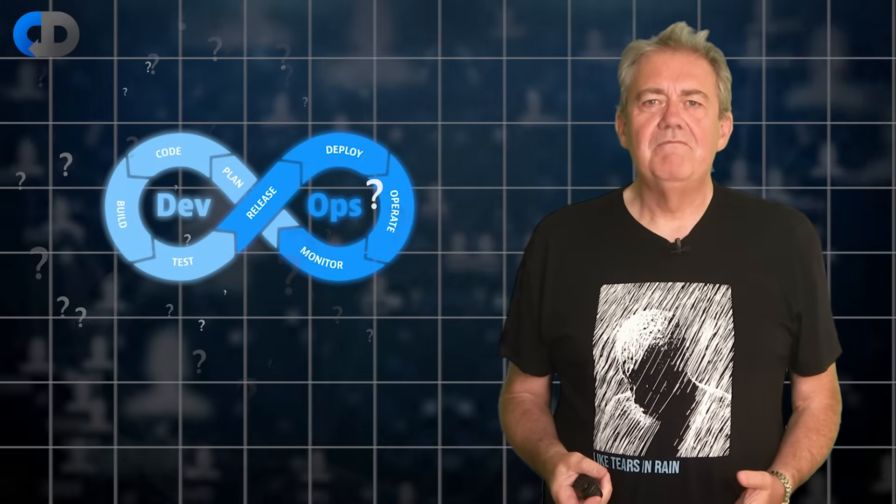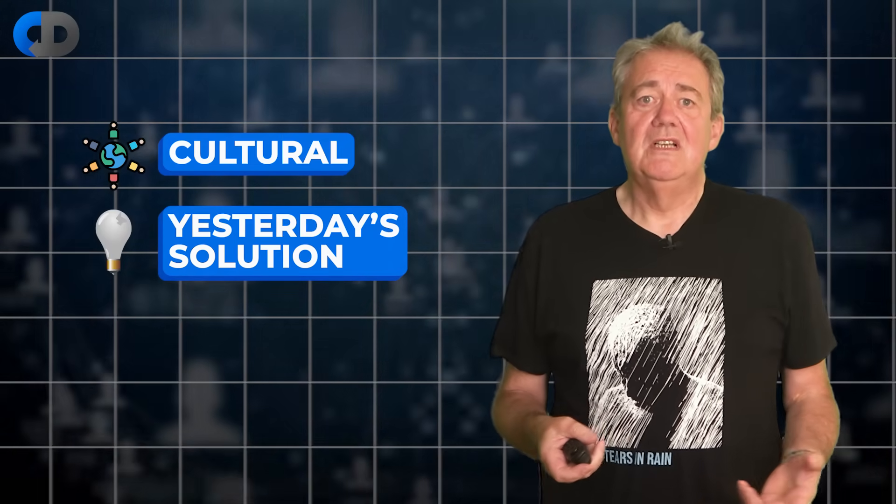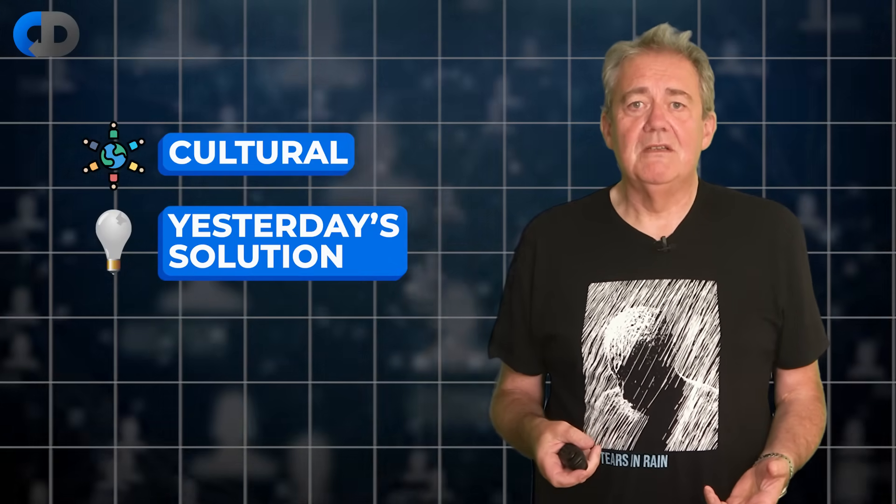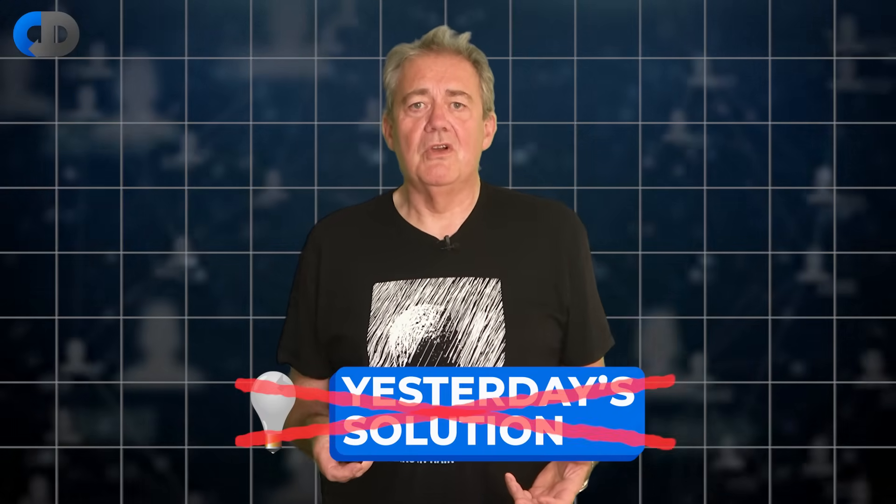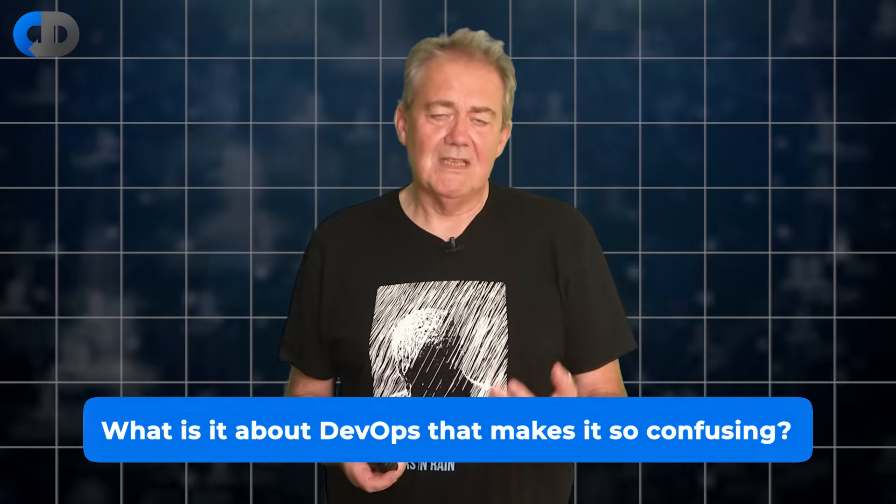DevOps is a confusing term. Some people use it as a synonym for simply operations. Some seem to think of it as some kind of secret sauce that's going to solve all of the problems of software development. Some see it as just a cultural thing. Some think it's yesterday's solution and is now replaced by platform engineering. There's some truth in all of these except for the last one, which is just wrong. So what is it about DevOps that makes it quite so confusing? That's our topic for today.